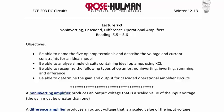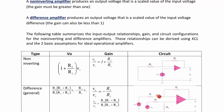A non-inverting amplifier produces an output voltage that is a scaled value of the input voltage. The gain must be greater than 1, and the polarity of the input will be the same as the polarity of the output. A difference amplifier also produces an output voltage that is a scaled value of the input, but the gain can be less than 1. The following table summarizes the input-output relationships, gain, and circuit configurations for non-inverting and difference amplifiers, derived using KCL and ideal op-amp conditions.